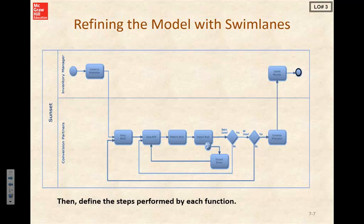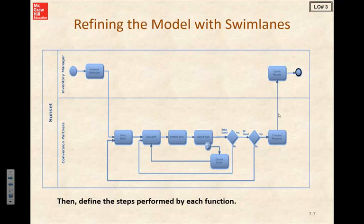If we want to refine our model with the swim lanes, we can take a look at who's responsible. The inventory manager authorizes production, then it goes down to our conversion partners where we're going to set up the batch. We're performing the work, inspecting work — is our batch done? We've got a gateway here, yes or no. If it is, we keep going and complete production. Then our inventory manager is going to update records and then we'll end our process.